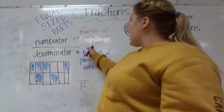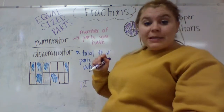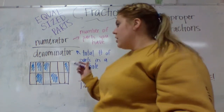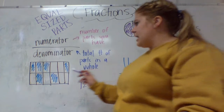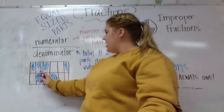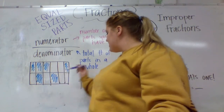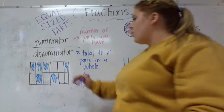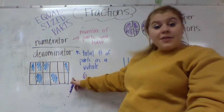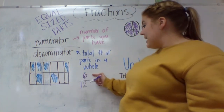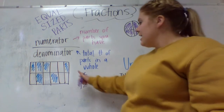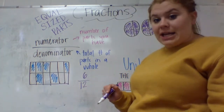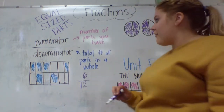Now for my numerator, I want to find how many pieces I have. They're going to normally tell me that by shading it in. So I need to count how many of these are shaded: 1, 2, 3, 4, 5, 6. So the fraction that's shaded here is 6 twelfths. 6 of these 12 pieces are shaded. So that would be my fraction.